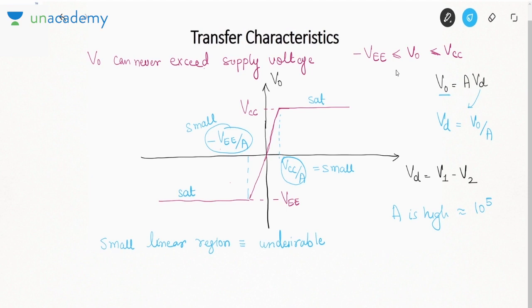This very small linear region is undesirable. If you apply even 1 millivolt, it may go into saturation. We don't want the amplifier to saturate — we always want it to give an output proportional to the input. So we have to increase this linear region. By applying feedback, we will try to increase this linear range. But remember the golden rule: V0 cannot exceed the supply voltage, no matter what amplifier you construct.